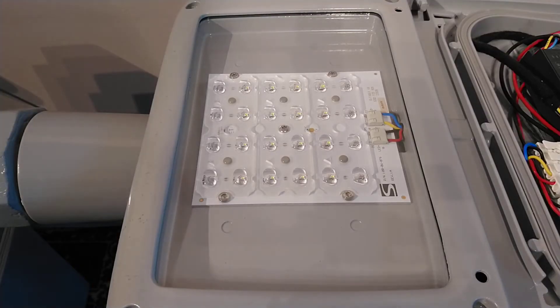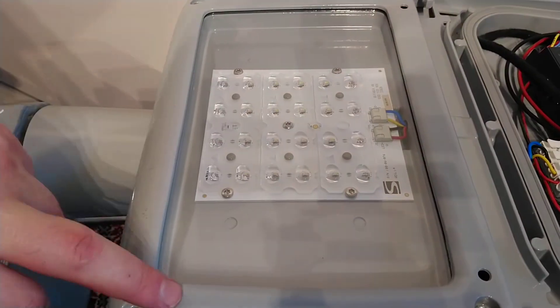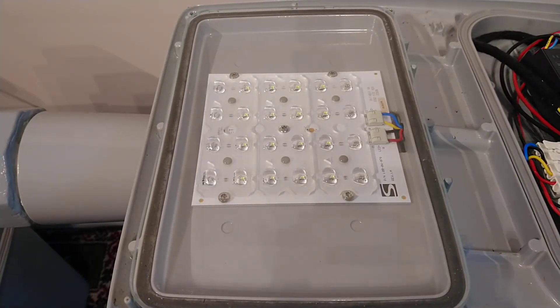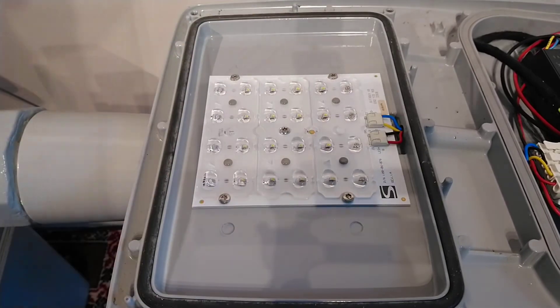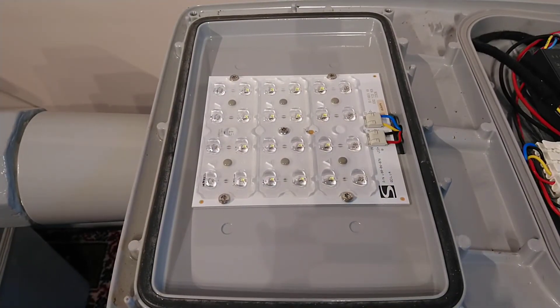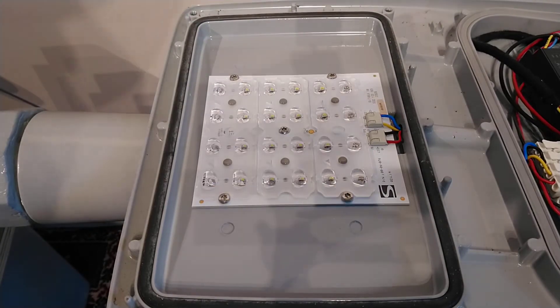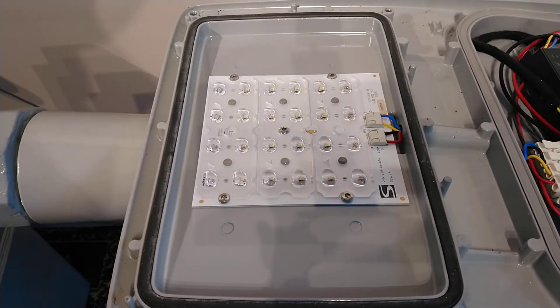Now to get to the LEDs, all you have to do is undo these four bolts here, and then you can remove this cover and you can remove this piece of glass. This will get you to the LEDs inside. As I said, the blue and the yellow wire go to the driver as well as the black and the red.